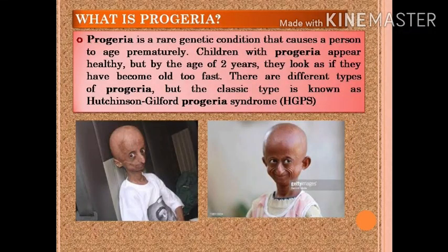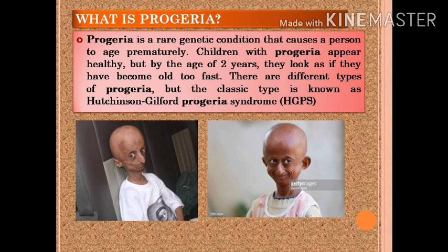Now, in the book you have a question: What is progeria? Progeria is a rare genetic condition that causes a person to age prematurely. Children with progeria appear healthy, but after the age of 2 years they look as if they have become old too fast. There are different types of progeria, but the classic type is known as Hutchinson-Gilford Progeria Syndrome, or HGPS. If you have seen the movie 'Paa', you would have seen this disease. Here in the picture you can see the condition of a child with progeria.